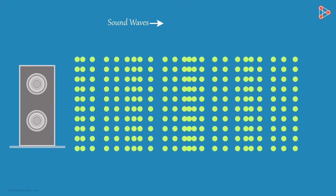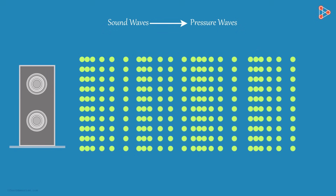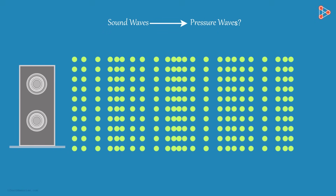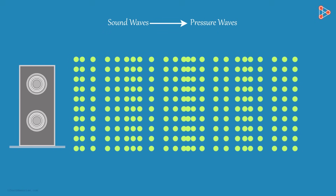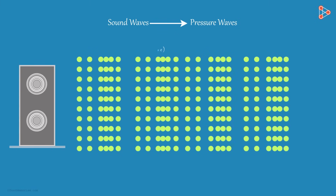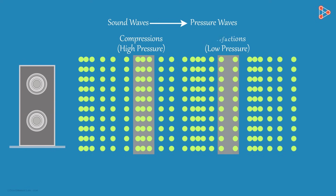Sound waves are also called pressure waves. Can you tell me why? It is because the sound wave consists of a repeating pattern of high-pressure regions called compressions and low-pressure regions called rarefactions through the medium.